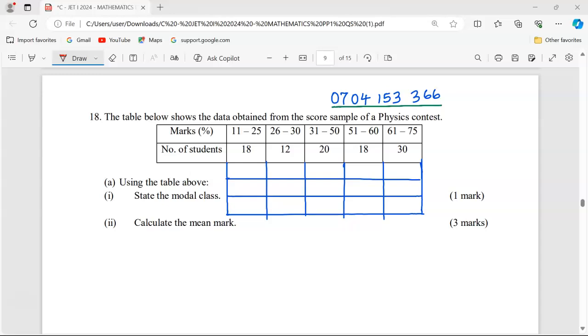Part A, using the table above: State the modal class. The modal class is the class which has the highest frequency. When we look at the classes and study their respective frequencies, we can see that the highest frequency is 30, and it is for the class 61 to 75. So this is our modal class.